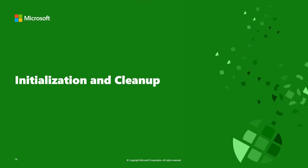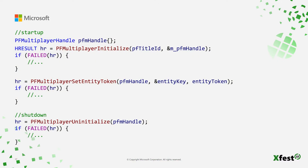For initialization and cleanup: initialization is straightforward. Pass your PlayFab title ID and the multiplayer handle to be initialized — this handle is used for most subsequent calls to PlayFab Multiplayer. Once that's done, set the entity token for your current users. This token is used for authentication when performing actions on behalf of a user. Setting the entity token creates the WebSocket connection used for state change events, and this connection is shared by all local users, so there's only ever one at a time.